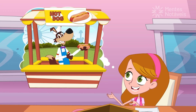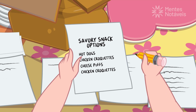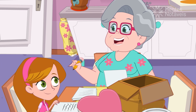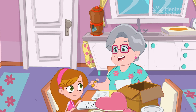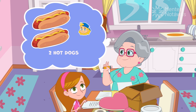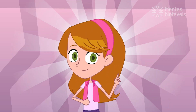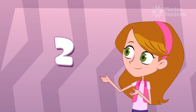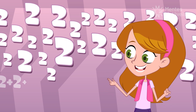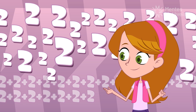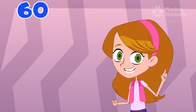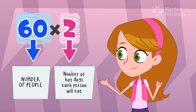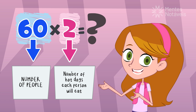So we're going to have a hot dog stand, aren't we? Yes, but I need to give the estimated number of hot dogs to the person in charge of the stand. We're going to have various savory snack options, so I'll consider two hot dogs per person. If we calculate that each person will eat two hot dogs, and we know we invited 60 people, we don't need to add two by two up to 60. We just need to multiply the number of people by the number of hot dogs each person will eat. That way, we'll find out how many hot dogs we need in total.